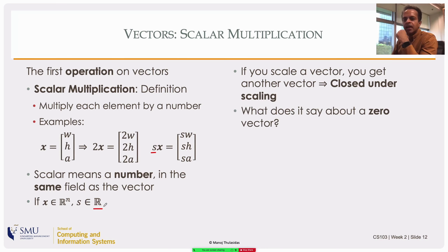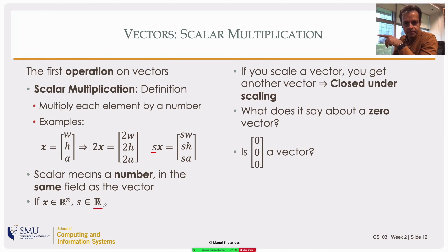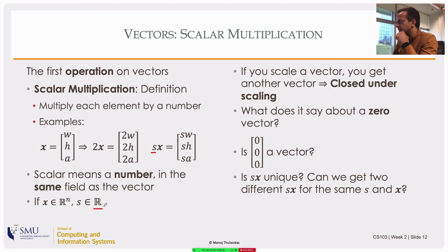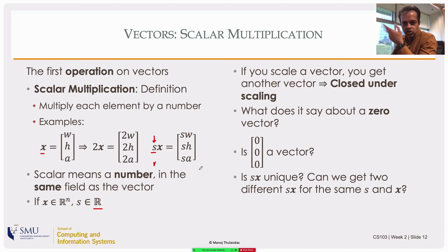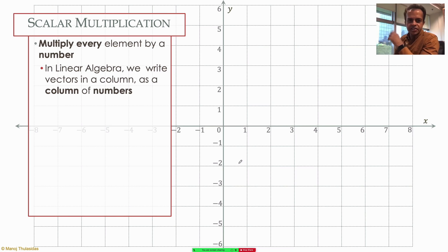Any scaling factor is valid — in particular, zero is okay. Zero is a real number, so you can multiply a vector by the scalar zero and get the zero vector, where all elements are zero. This zero vector must be in the set of all possible vectors because the set is closed under scaling. Also, given one vector x and a scaled version with factor s, can a different factor r give the same scaled version? No — since these are real numbers, the scaling factor is unique.